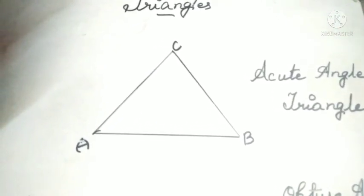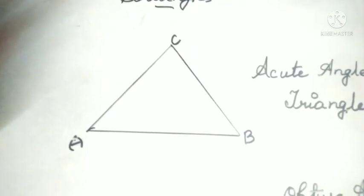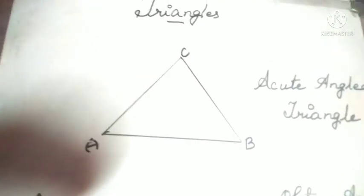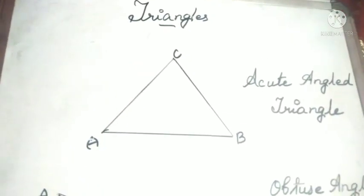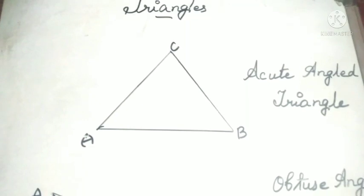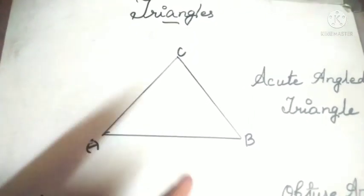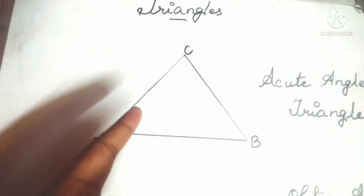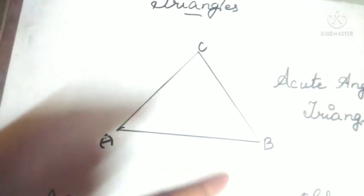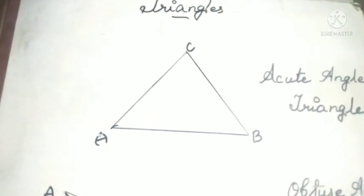A triangle whose all three angles are acute is known as an acute angled triangle. Triangle ABC is an acute angled triangle since all its angles are acute.